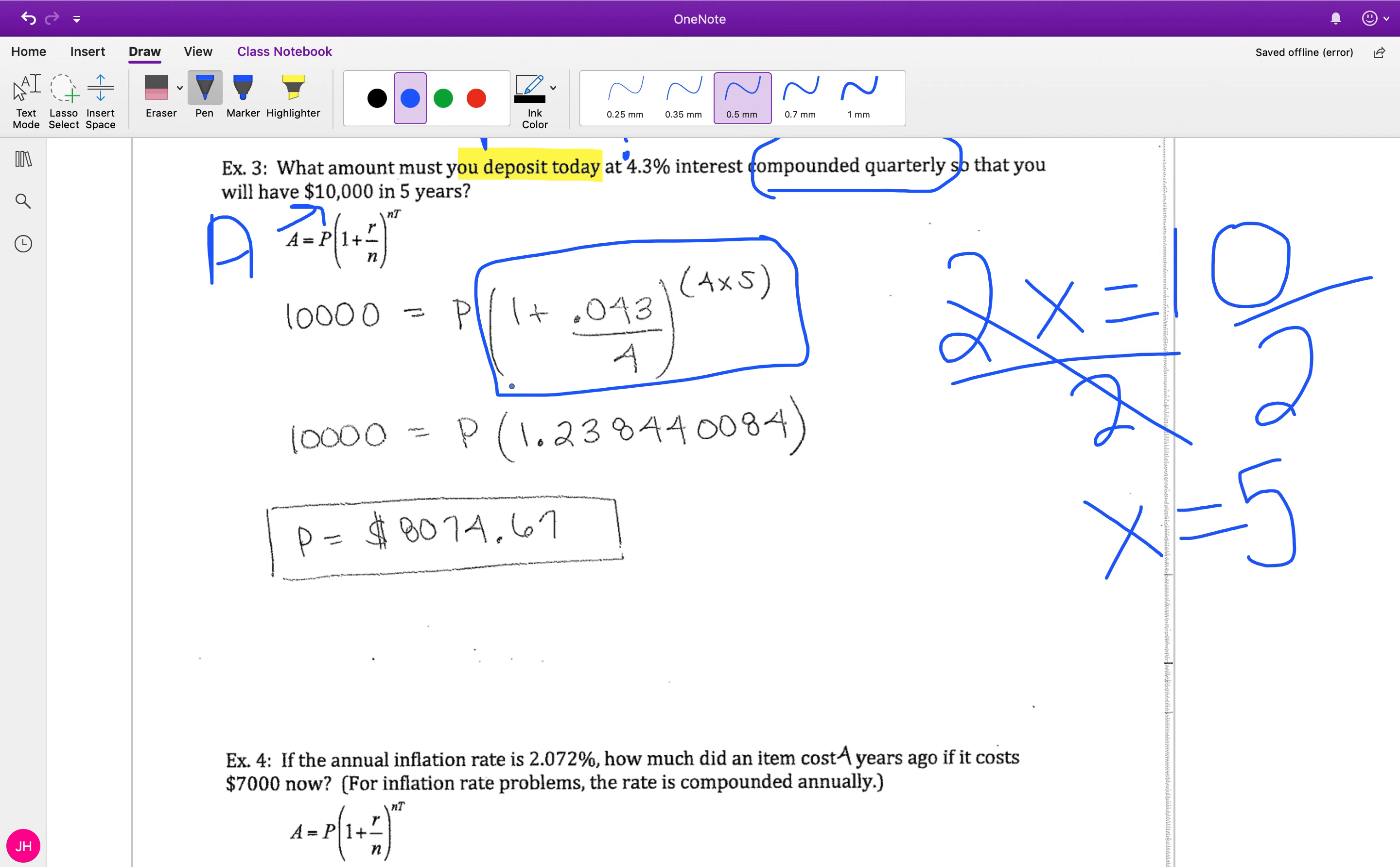That might kind of look really weird, but if you think about this being a simplified algebra problem, you guys know how to solve this: 2x equals 10, you would divide both sides by 2 to give you x equals 5. I'm gonna do the same thing here. This is a crazy number, but that's what I'm gonna divide by. So I'm gonna divide both sides by this 1.238. I would type in all the numbers - don't round there - I'm just being lazy with my writing. So 10,000 divided by 1.238440084 gives me my final answer, and then I can round my final answer to two decimal places.